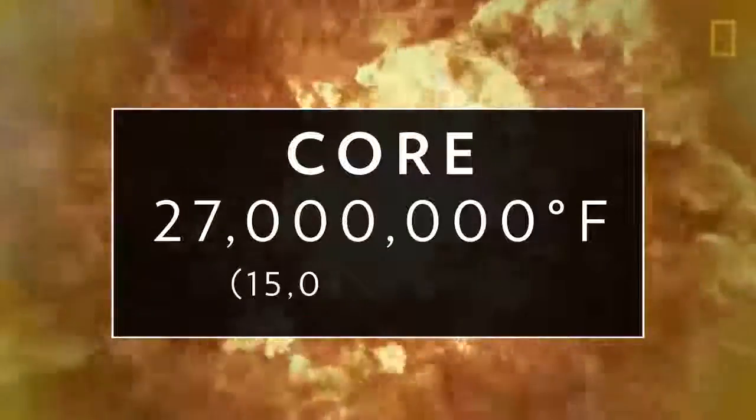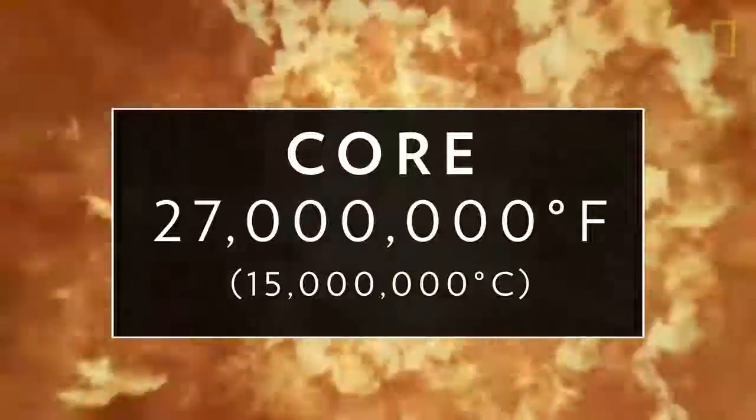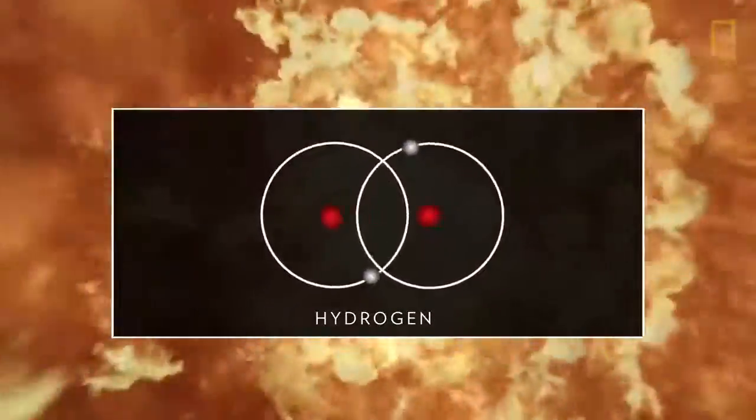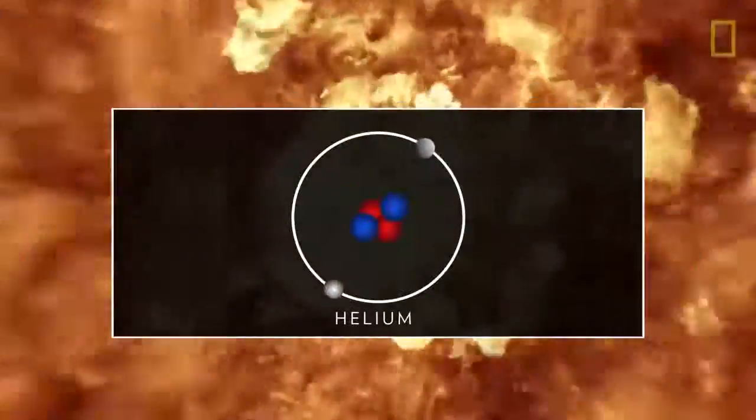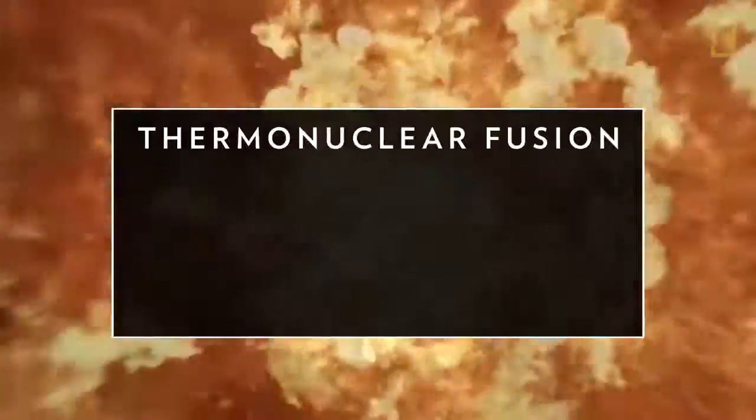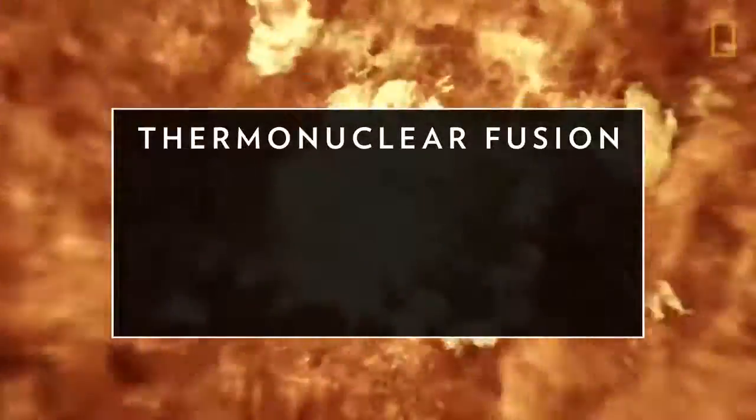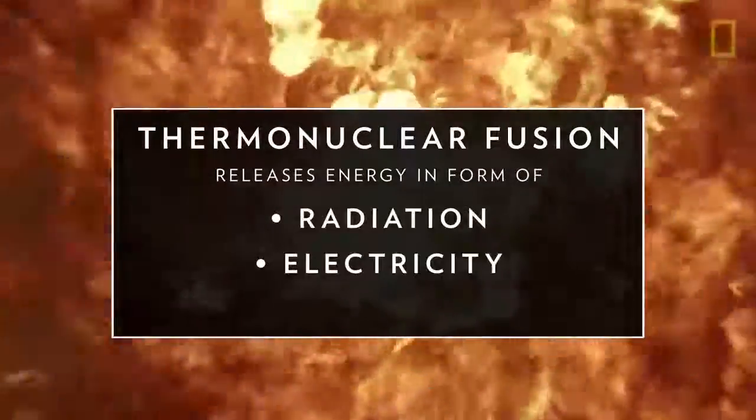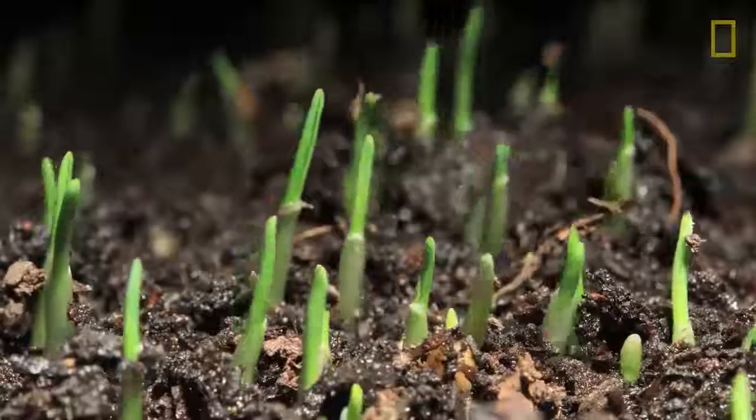In the core, temperatures reaching at least 27 million degrees Fahrenheit, combined with the Sun's powerful gravity, fuse together hydrogen molecules to create helium. Called thermonuclear fusion, this releases an enormous amount of energy in the form of radiation, electricity, solar wind, and, as we experience on Earth, life-giving heat and light.